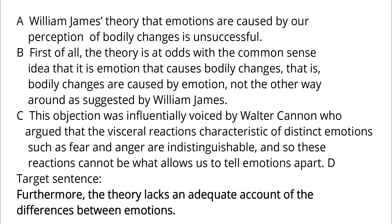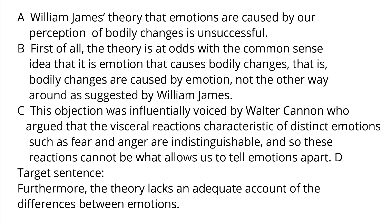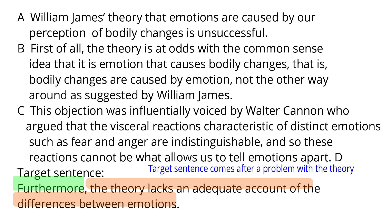The second target sentence reads: 'Furthermore, the theory lacks an adequate account of the differences between emotions.' The target sentence says the theory cannot explain the differences between emotions. 'Furthermore' implies that the problem stated in the target sentence is an additional problem, so it should come after a problem of the theory. Option A makes a general statement that James' theory is unsuccessful but states no specific problem. Option B talks about one specific problem of the theory, making it a good candidate.